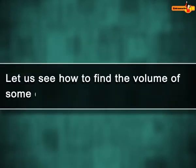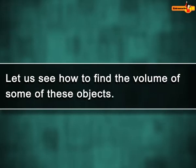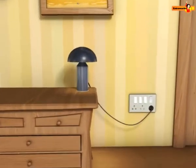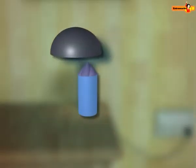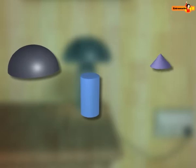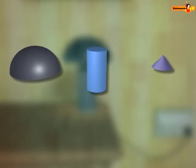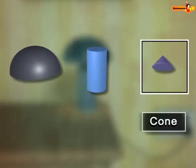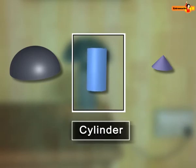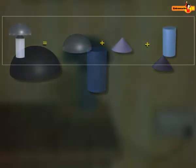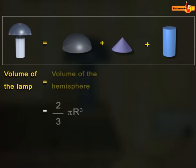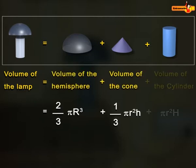Here we see a lamp which is a combination of a hemisphere, a cone, and a cylinder. Volume of the lamp is equal to the sum of volumes of the hemisphere, cone, and cylinder.